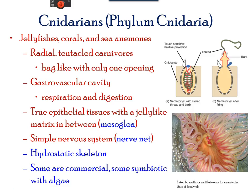Cnidarians contain animals found only in aquatic environments, including jellyfish, sea anemone, and hydroids. They all have tentacles with stinging cells that are used to capture prey.